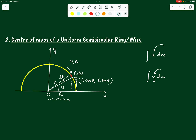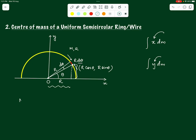Before finding the center of mass, we need the mass of this element. The mass dm of the element equals the mass per unit length of the half ring multiplied by the length of the element. The length of the half ring is πr (half the circumference), so the mass per unit length is m/πr. The length of our element is r·dθ, so dm = (m/πr)·r·dθ = m·dθ/π.